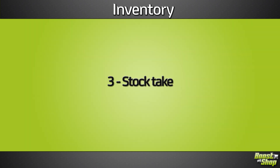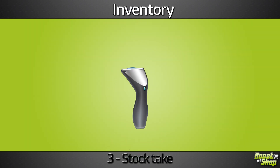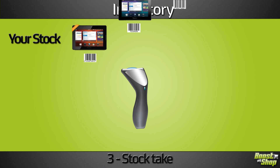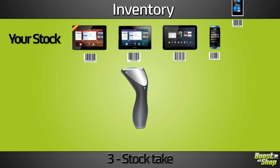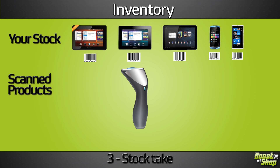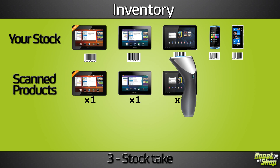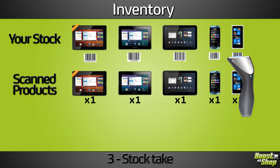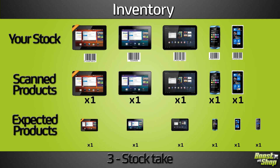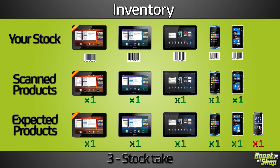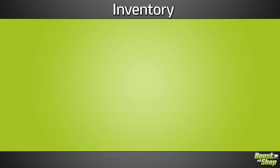Stock take — using a barcode reader, you can process a partial or complete stock take per location, scanning every product on the shelves. Then ask ERP to adjust the stock levels based on the quantity scanned.